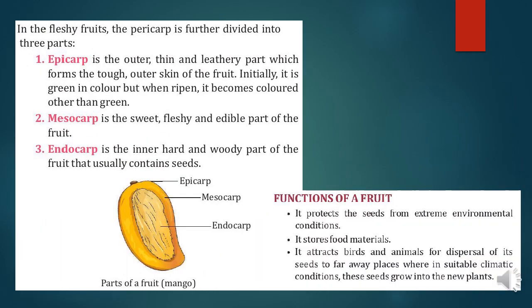For fleshy fruits, the pericarp is further divided into three parts. Epicarp is the outer, thin, and leathery part which forms the tough outer skin of the fruit. Mesocarp is the sweet, fleshy, and edible part which we eat. Endocarp is the inner, hard, and woody part of the fruit that usually contains the seeds. You can see in the figure — mango is the example shown.